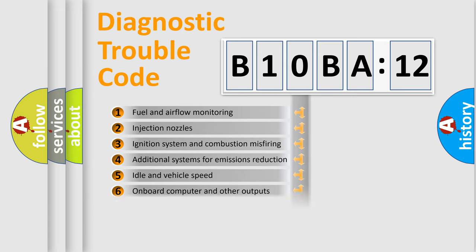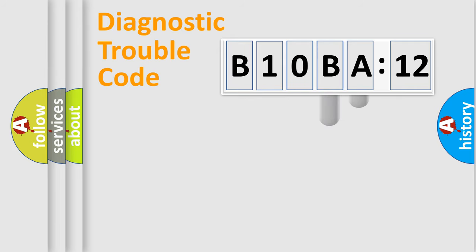The distribution shown is valid only for the standardized DTC code. Only the last two characters define the specific fault of the group.